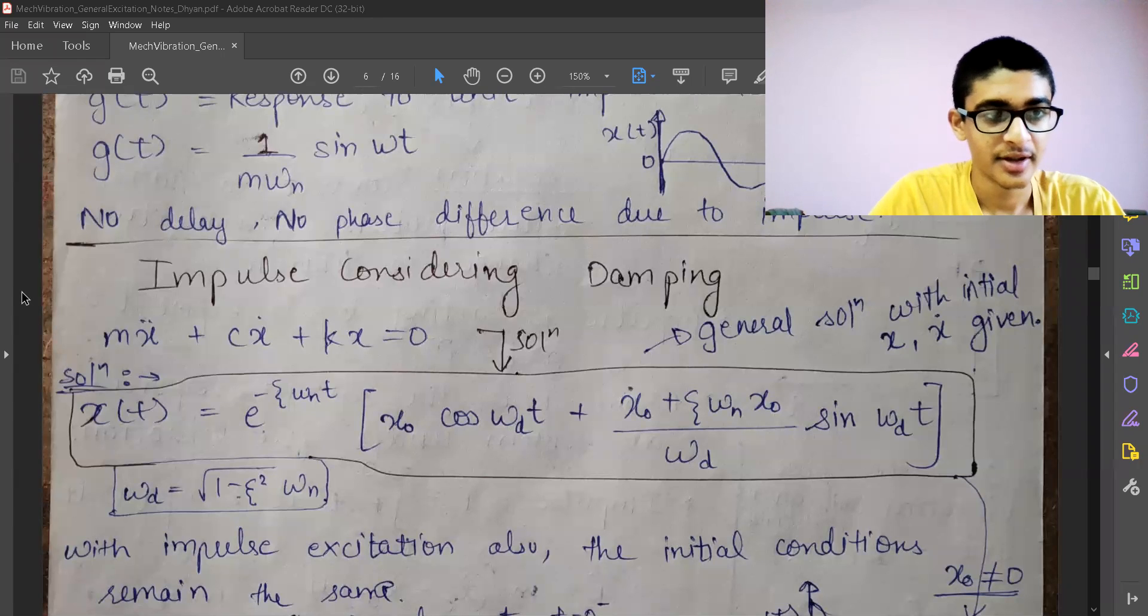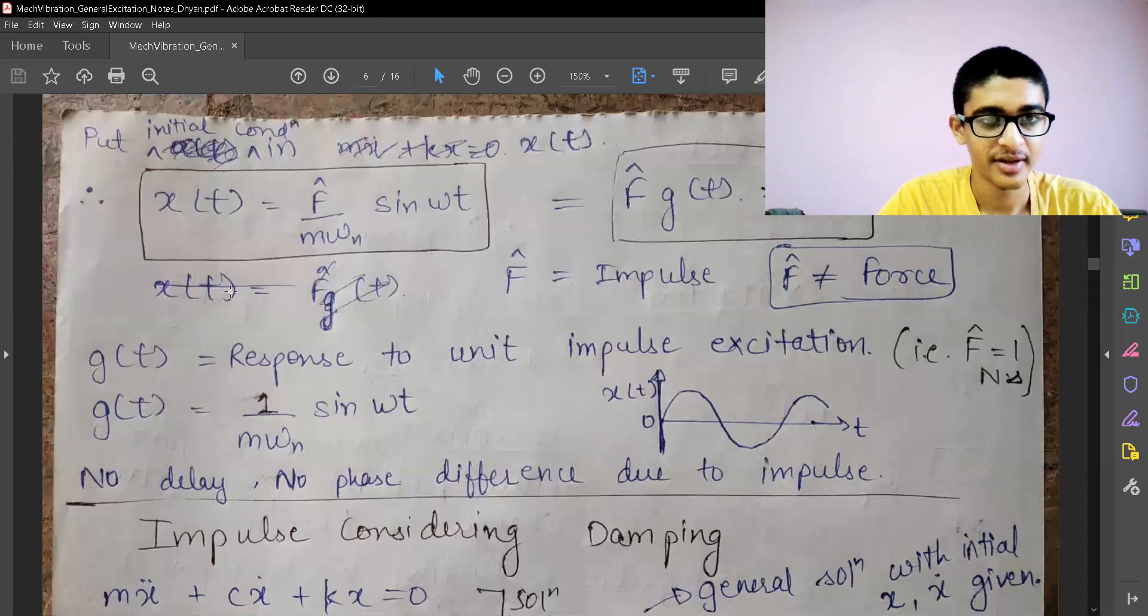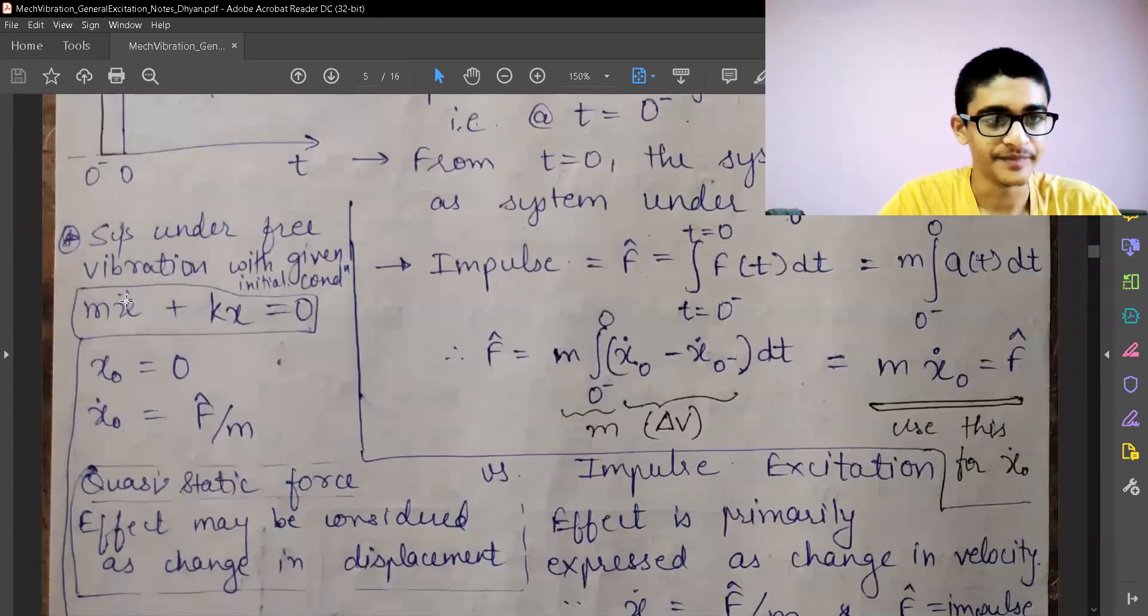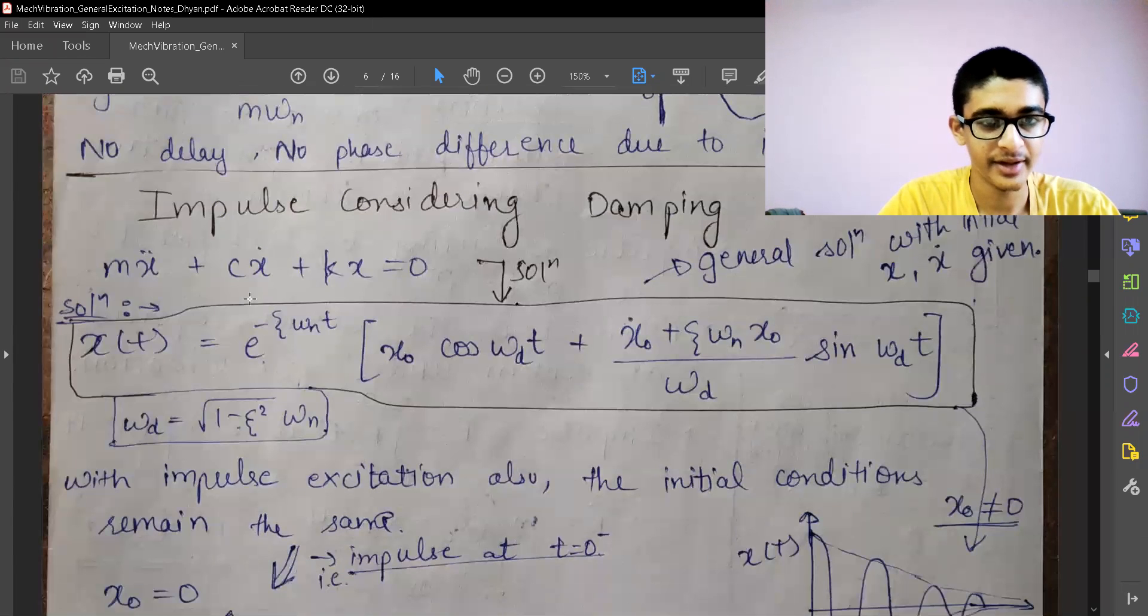Earlier we have seen the response to impulse but the system was not given any damping. It was free of damping, but now we will see the system which was having damping.